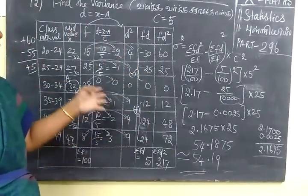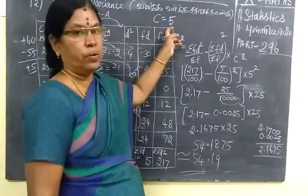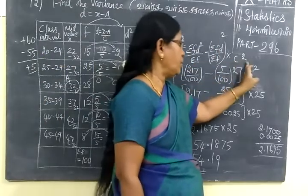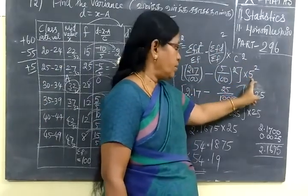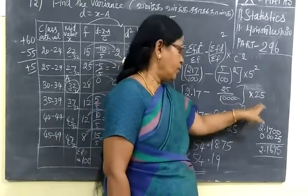So variance is equal to this value. When you write, C equal to 5, you will write C square. Write the C value.